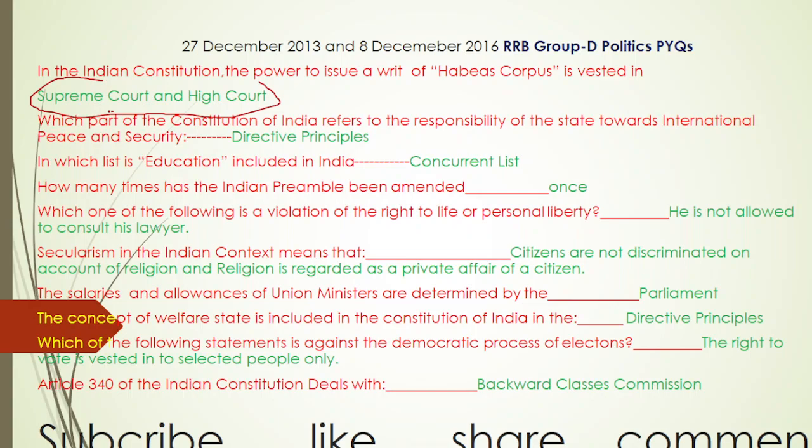Which one of the following is a violation of the right to life and personal liberty? The correct answer is: he is not allowed to consult his lawyer. If you cannot consult your lawyer, that is the wrong thing — it is a violation of our life, authorities, and personal liberty.